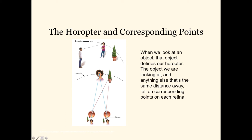Her image will actually be on the same relative location on the left retina as on the right retina, because both eyes are converging and fixating on her. This distance of his fixation point creates something called a horopter — an imaginary semi-circle of any other object that might be the exact same distance away from him as the woman. Here we see a plant that happens to be the exact same distance, so its image is also in the exact same relative place on both eyes. Her image is represented in blue dots, the plant's in red dots, and we can see they are consistent.